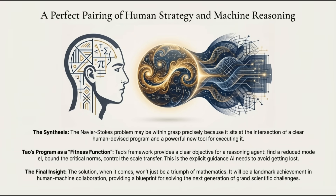We're hunting for the mathematical seatbelts that keep the universe from falling out of the car. But finding them has proven quite difficult for human intuition alone. This is where the story enters the modern age. The complexity of 3D turbulence might be beyond what human brains can visualize on their own, so a new partner has joined the hunt: AI, artificial intelligence. We aren't just using computers to run simulations — we're using deep learning and AI reasoning models to think alongside mathematicians like Terence Tao. It's a fusion of rigorous human logic and the unmatched pattern recognition prowess of machines.